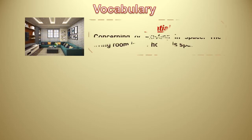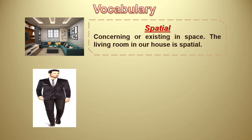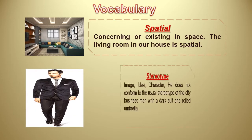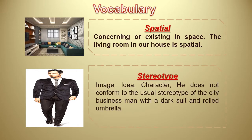Vocabulary number four is the word spatial. Spatial means very wide, concerning or existing in space. Example: the living room in our house is spatial — very big and wide, as you see in the picture. Next is stereotype. A stereotype is an image, idea, or character. Example: he doesn't conform to the usual stereotype of the city businessman.